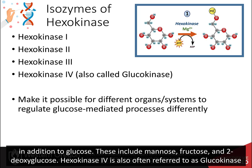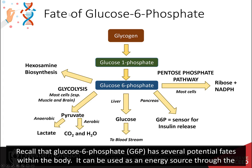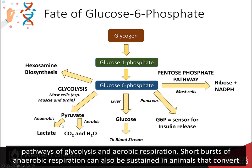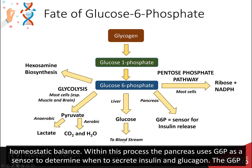Hexokinase 4 is often referred to as glucokinase and is specific to the liver and pancreas. Recall that glucose 6-phosphate has several potential fates within the body. It can be used as an energy source through the pathways of glycolysis and aerobic respiration. Short bursts of anaerobic respiration can also be sustained in animals that convert pyruvate into lactate. Glucose 6-phosphate can also be dephosphorylated in the liver and released back into the bloodstream to maintain homeostatic balance, and the pancreas uses glucose 6-phosphate as a sensor to determine when to secrete insulin and glucagon.